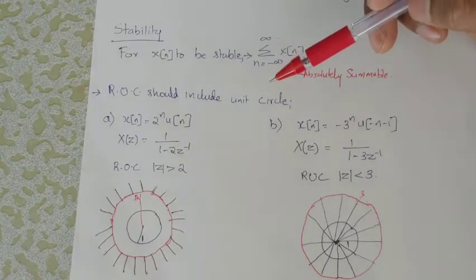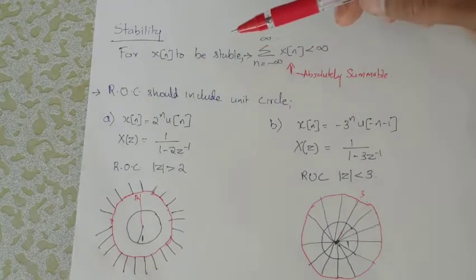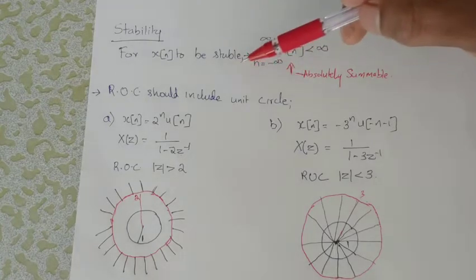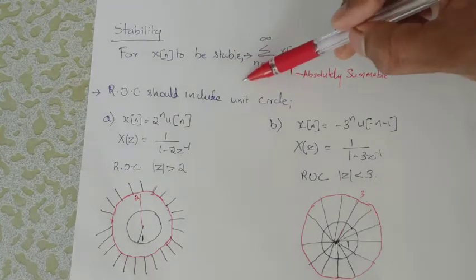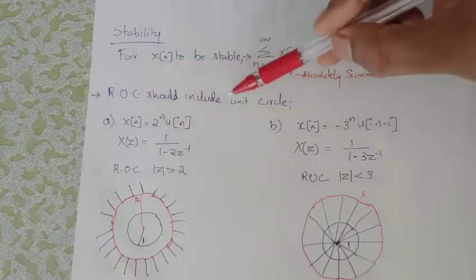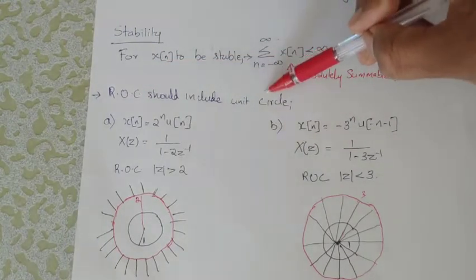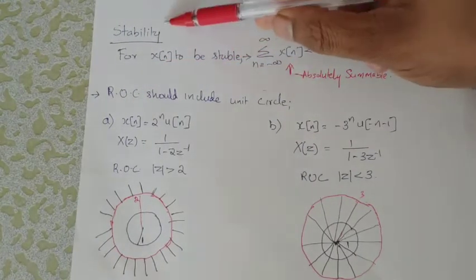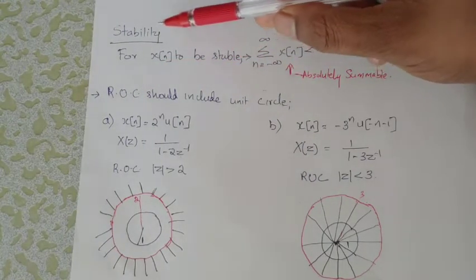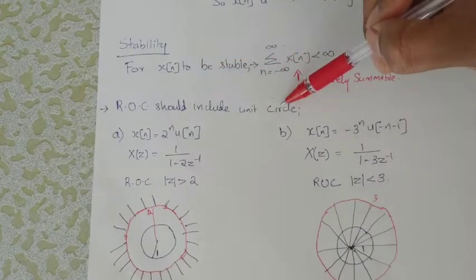The unit circle is included in the ROC — that is stable. ROC is included in the unit circle. If you are in a stable condition, ROC should be included in the unit circle.